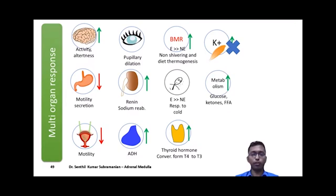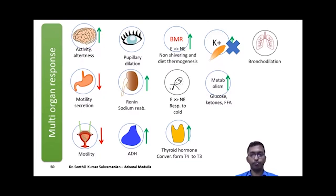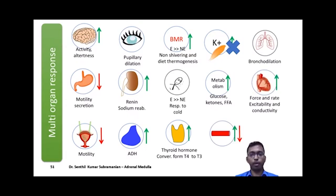The metabolic action of catecholamines is essential in emergencies — to divert necessary nutrients to active muscles and to the brain. Their action on metabolism is to increase plasma glucose, ketones, and free fatty acids. They act on the lungs to cause bronchodilation, increasing oxygen uptake. Their direct action on the heart is to increase the rate and force of contraction, thereby increasing stroke volume, heart rate, cardiac output, and blood pressure.